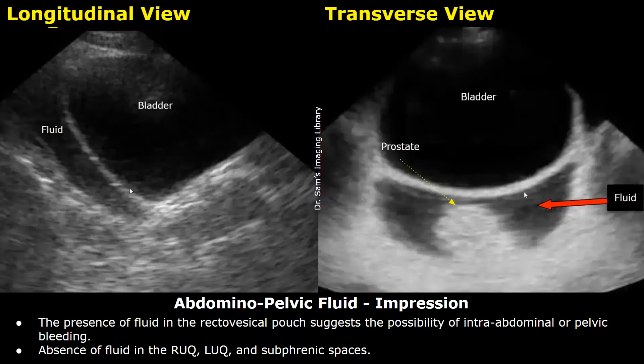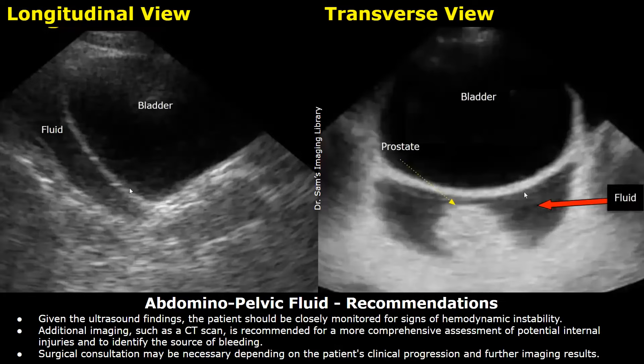Impression: The presence of fluid in the recto-vesicle pouch suggests the possibility of intra-abdominal or pelvic bleeding. Absence of fluid in the right upper quadrant, left upper quadrant, and subphrenic spaces.